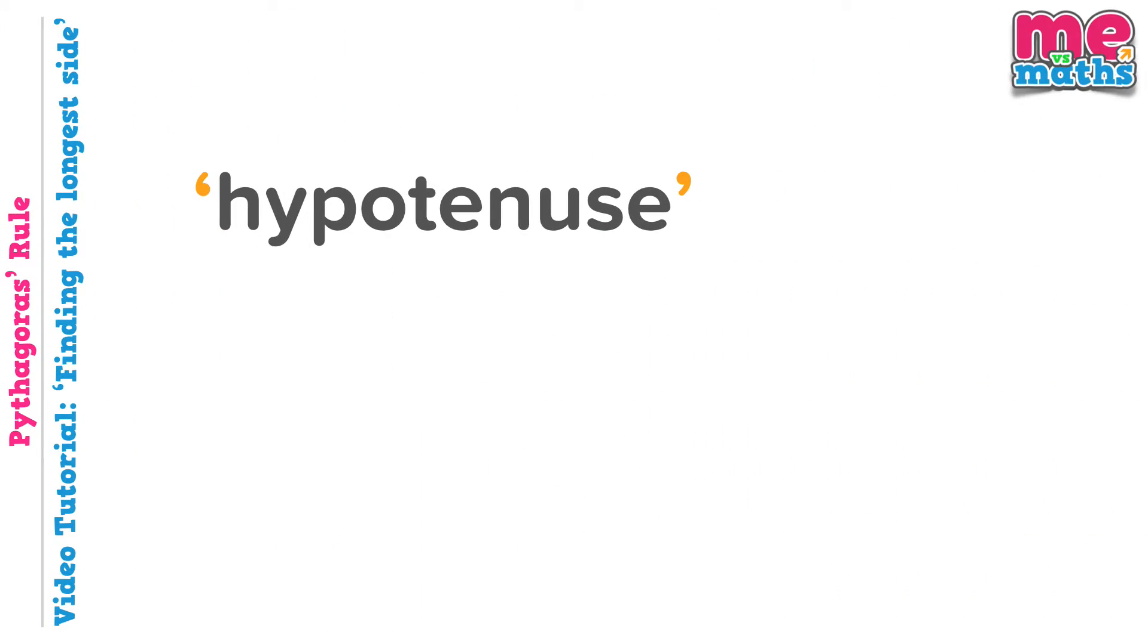And that word is hypotenuse. The hypotenuse is a special name given to the longest side of a right-angled triangle. Now it's normally fairly easy to see which side in a triangle is the longest, but if you're not sure, it's always good to know that the longest side and therefore the hypotenuse is always opposite the right angle.